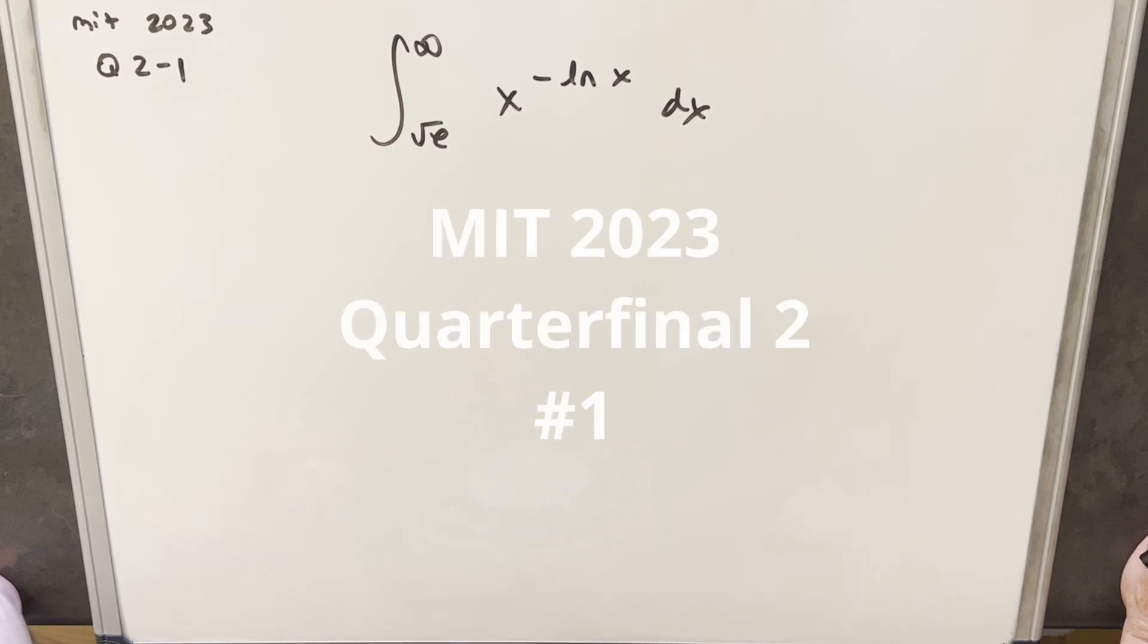Hey, today I thought I'd do another integral from MIT Integration B 2023. This was actually from the quarterfinal, problem 2-1. Okay, so let's take a look at it. So we have the integral from square root of e to infinity of x to the minus ln x dx.